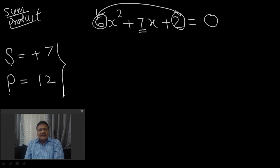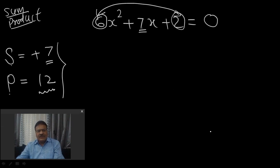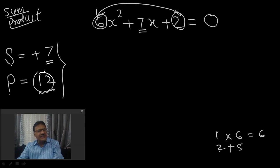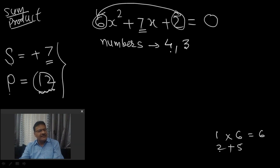We need to search for two numbers whose sum equals 7 and whose product equals 12. For example, 1 and 6 — sum is 7 but product is not 12. Two and 5 — product is 10, not 12. So by hit and trial, the numbers are 4 and 3: sum is 7 and product is 12.